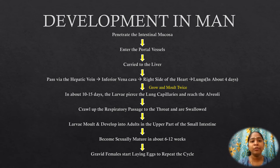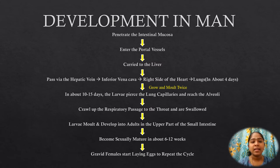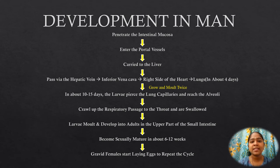In about 10 to 15 days, the larvae pierce the lung capillaries and reach the alveoli. They crawl up the respiratory passage to the throat and are swallowed. The larvae molt and develop into adults in the upper part of the small intestine, becoming sexually mature in about 6 to 12 weeks. The gravid females then start laying eggs to repeat the cycle.